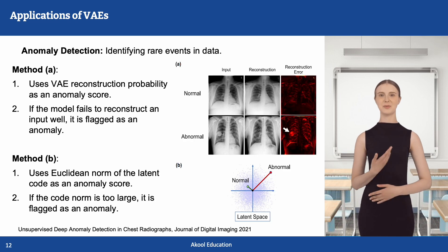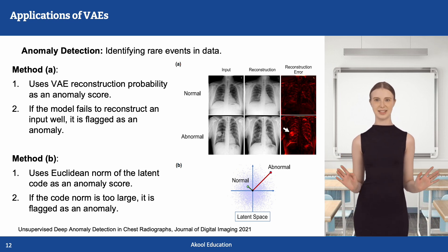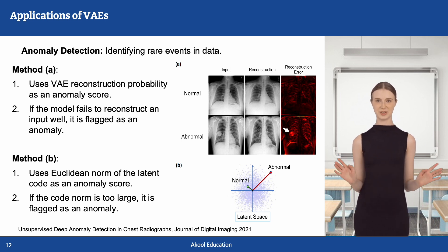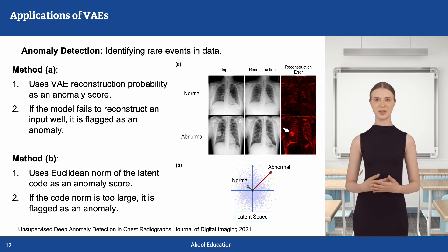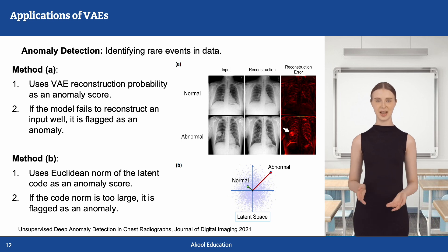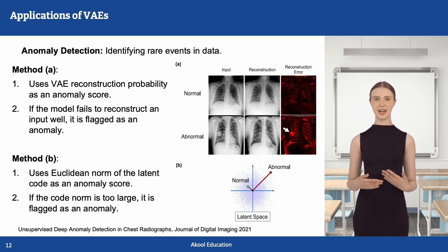Variational autoencoders are commonly used for unsupervised anomaly detection, particularly in medical imaging and industrial monitoring. There are two primary methods. Method A uses reconstruction probability: if an input is poorly reconstructed, it is flagged as an anomaly. Method B uses the Euclidean norm of the latent code: if the code norm is too large, the sample is flagged as an anomaly. Figure A presents an example of utilizing reconstruction probability for anomaly detection in chest radiographs, while Figure B illustrates the Euclidean norms of latent codes for both a normal and an abnormal example.